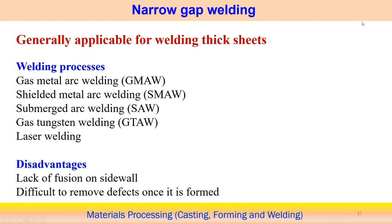For example, stainless steel at 90 mm thickness can be joined using narrow gap welding with a very small weld bead profile, compared to conventional welding of 90 mm carbon steel which requires a much larger volume of deposited material. Narrow gap welding is generally applicable for very thick sections and can utilize GMAW, SMAW, submerged arc welding, GTAW, or laser welding with specific designs. One disadvantage is lack of fusion on the side wall, where the arc may not properly deposit material at the side wall, and defects formed deep in high-thickness structures are very difficult to remove.